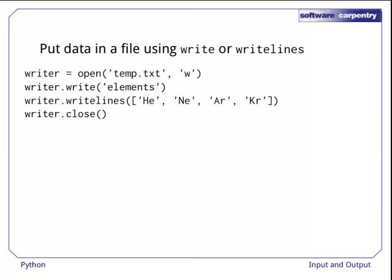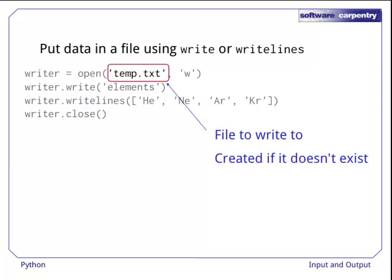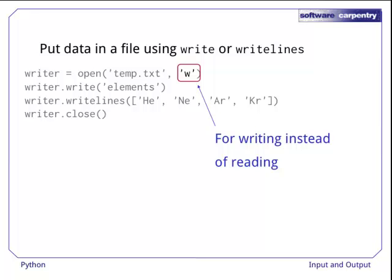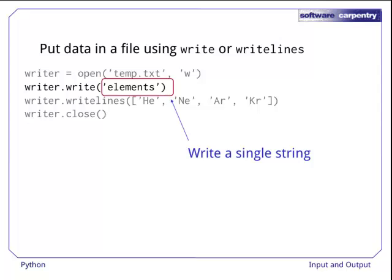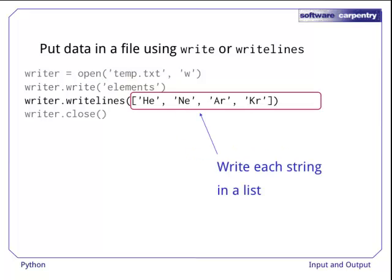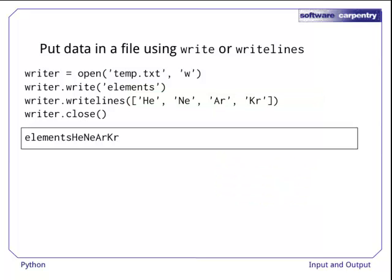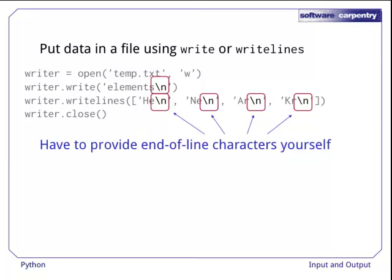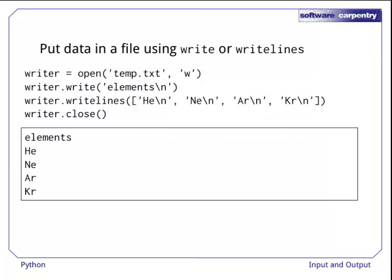Here's a program that writes to temp.text using these two methods. As before, we open the file with Open. The first argument is the file we want to write to. Its previous content will be overwritten if it already exists, and it will be created if it doesn't. The difference between this call and the ones we've seen before is that the second argument is the string W instead of the string R, which signals that we want to write to the file. The program then uses the file object's Write method to write a string to the file. Alternatively, it can use WriteLines to write each string in a list. But if we run the program, then look in temp.text, the output is all crammed together. The reason is that Python only writes what we tell it to, and we didn't tell it to write any end of line characters. We have to modify the program to add a new line, backslash n, at the end of each line. When we run this program, we get the output we want.